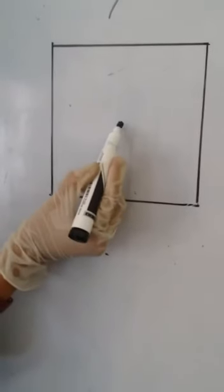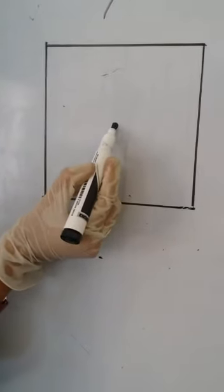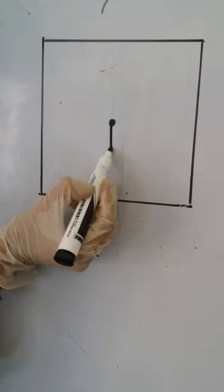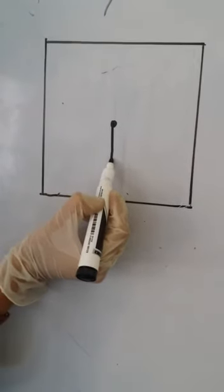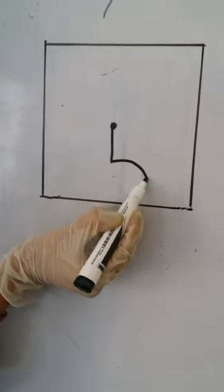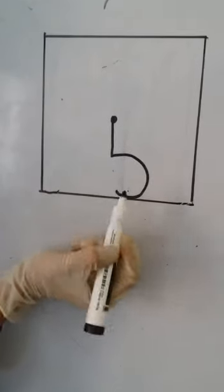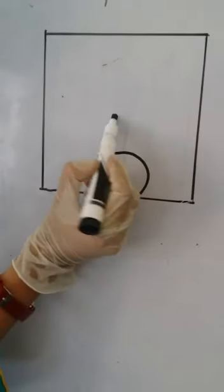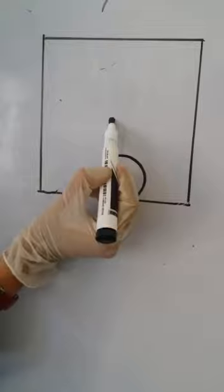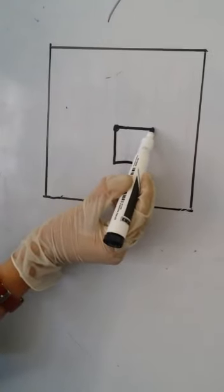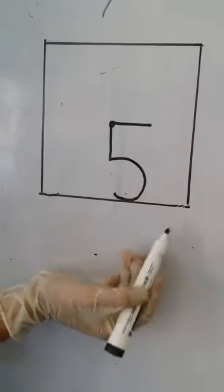Put your pencil on the door. Come down. Make a straight line. Then make a semicircle. Then again start from here and make a sleeping line. This is number 5.